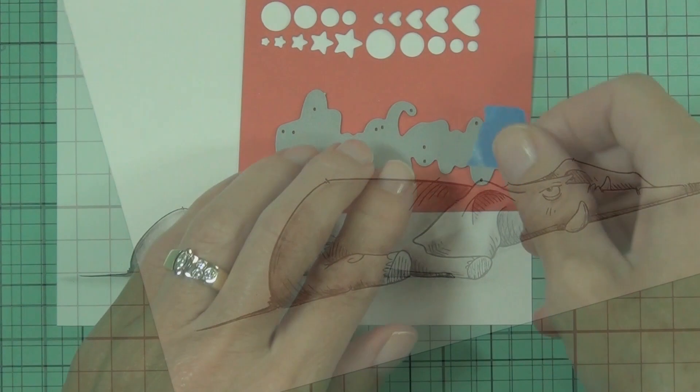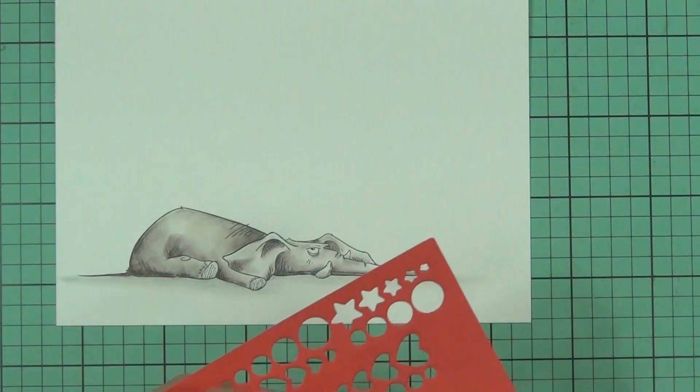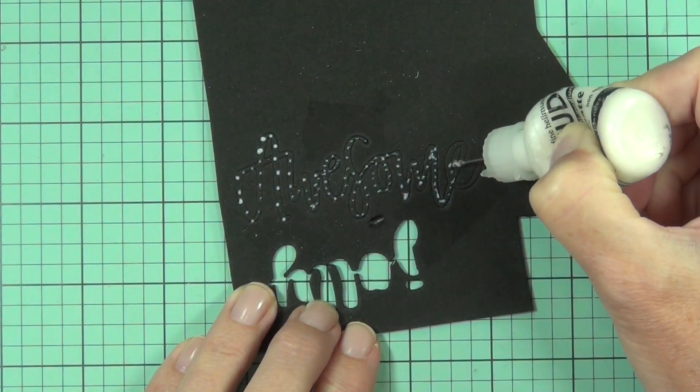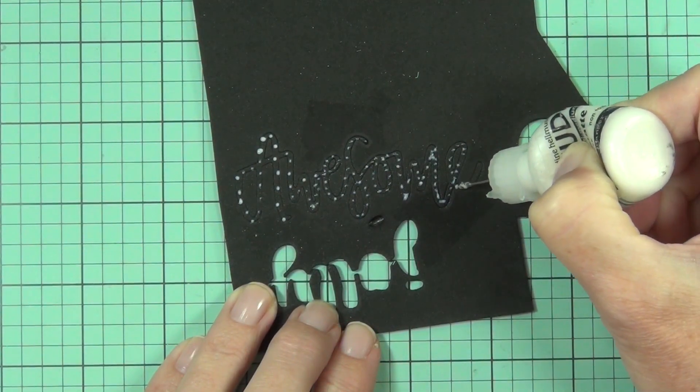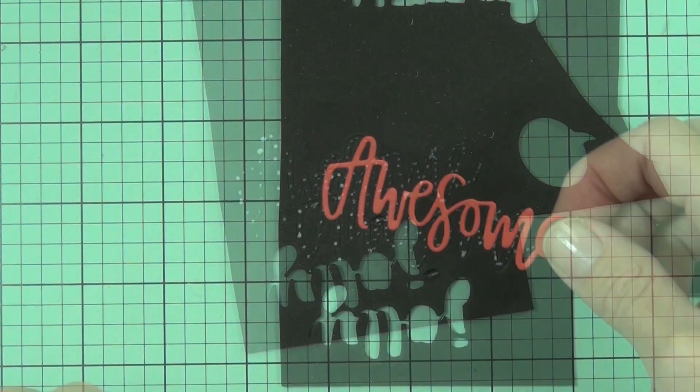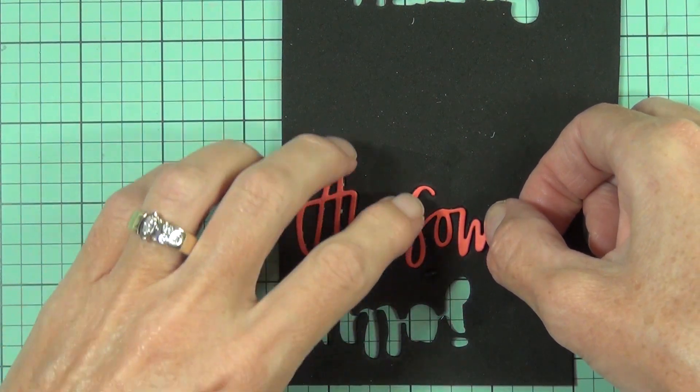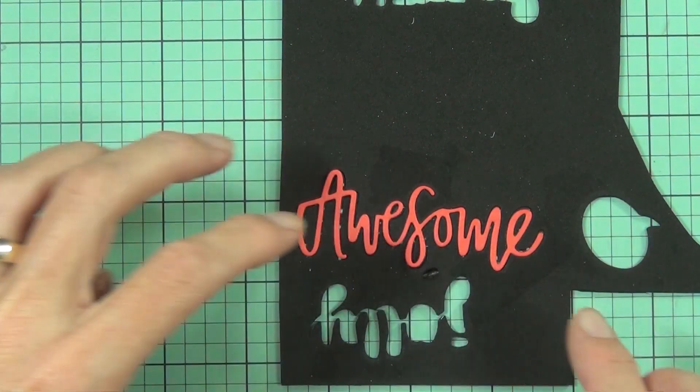Neat and Tangled. The stamp set is called Awesome and the die set is also called Awesome. I've cut it out with some bright red cardstock because I thought that would really pop on the front of this card. This is actually a retirement card and the request was for a retirement card for